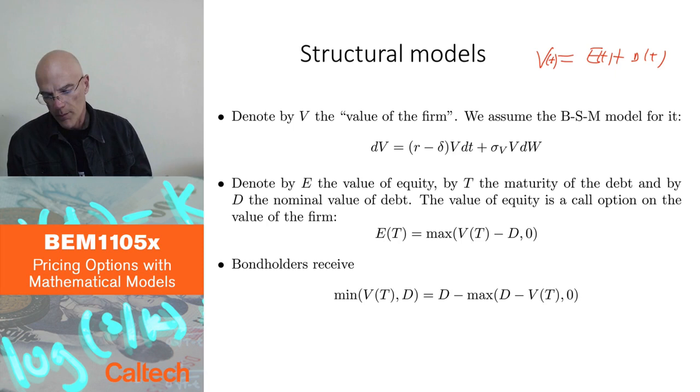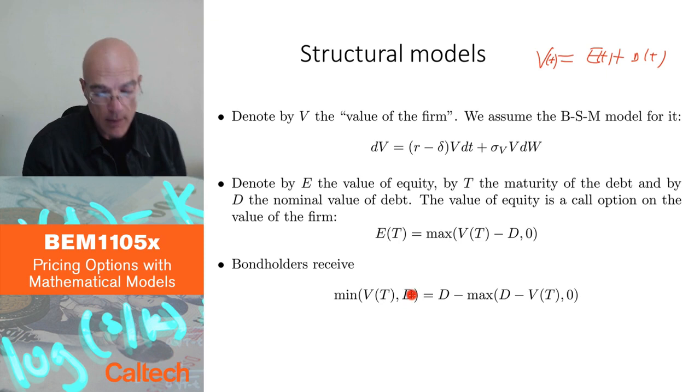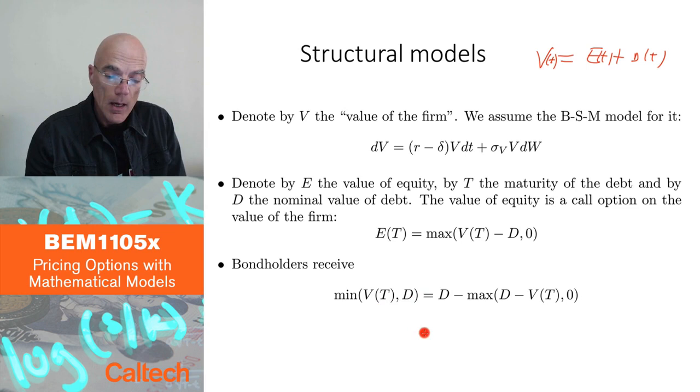Now, we don't really want to price the stock. What we want to price here is a defaultable bond, the bond of a company which can go bankrupt. So what is the final value for the bondholders? The bondholders will receive D if there is no bankruptcy, or they will receive everything which is less than D when there is bankruptcy. They just get everything what is left, which is V of D, or altogether we can write that as a minimum between V of T and D.